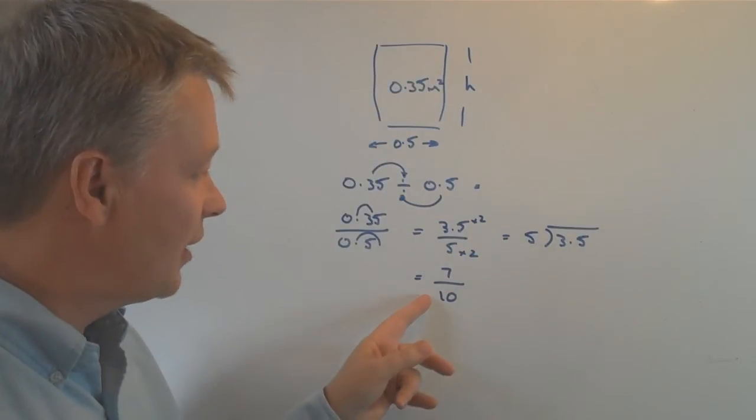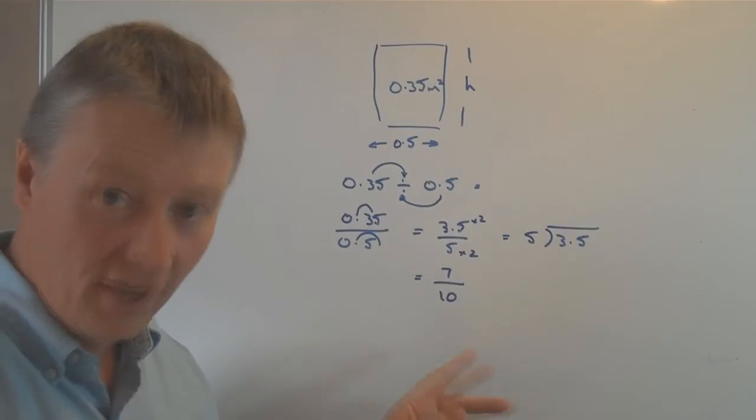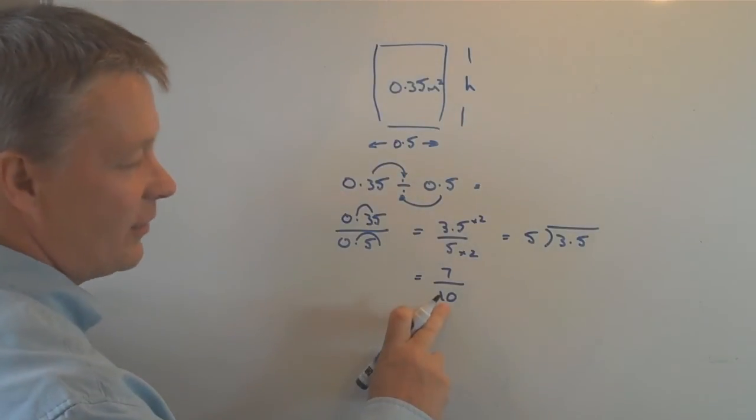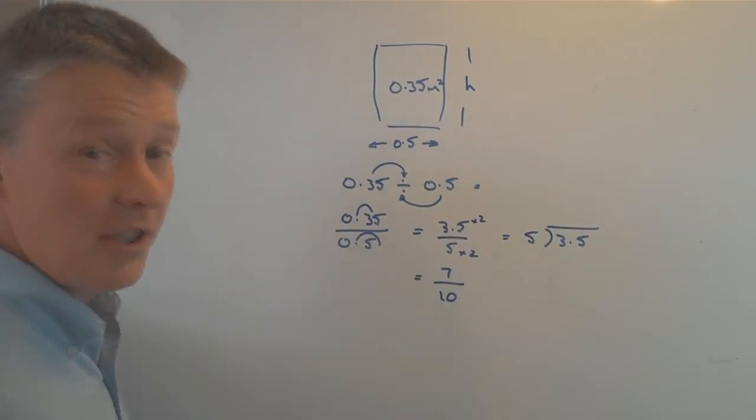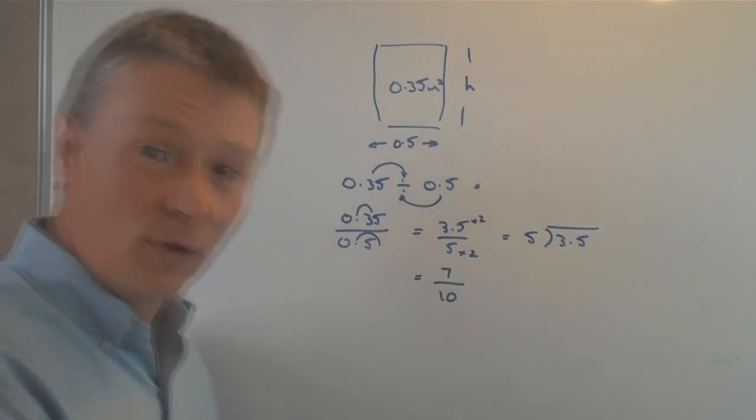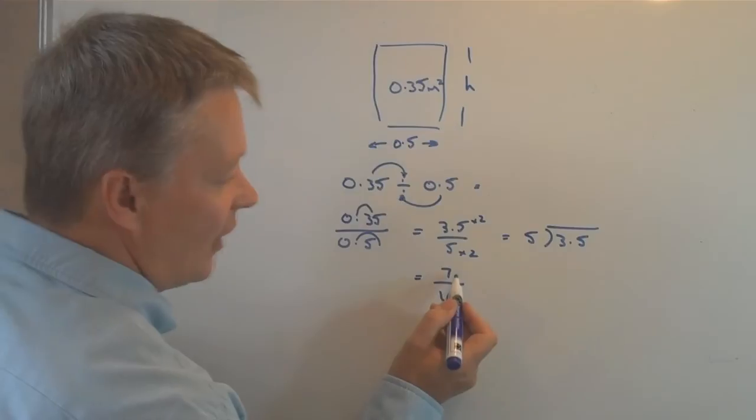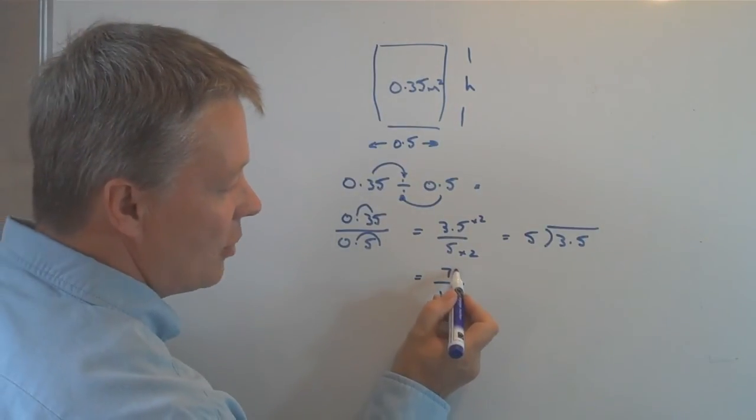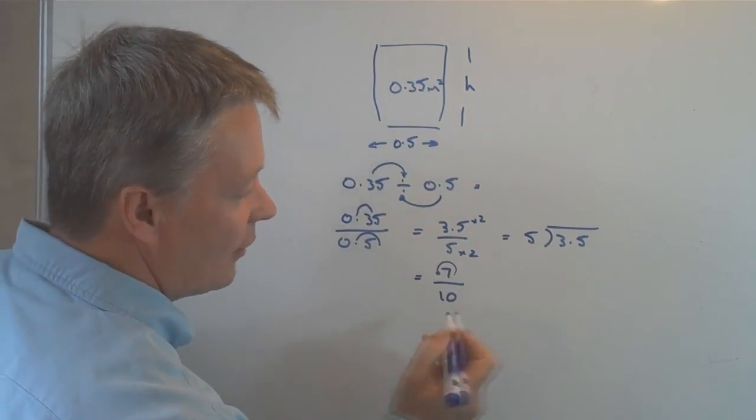But really, because the problem has been given as decimals, I need to convert that to a decimal. The way to do that is I'm dividing by 10, so I simply move my decimal point by one place towards the left.